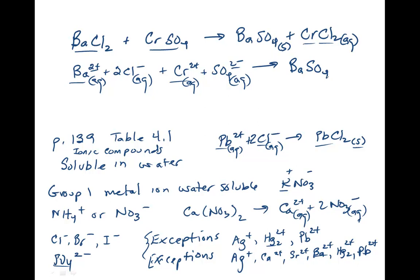So down on the second line, you keep the barium sulfate together and you put a solid to say that's a precipitate coming out of the reaction. But the chromium, because it does dissolve in water, you show that as a chromium 2+ ion aqueous, and then 2 chloride ions aqueous, because it does dissolve in water.